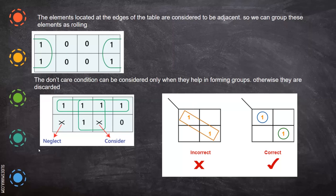Here we'll be seeing that when you are entering an X, X is mainly for the don't care condition. What do you mean by don't care condition? At any point in time, this can have a one or a zero. This don't care condition can be used for forming pass quads, etc.